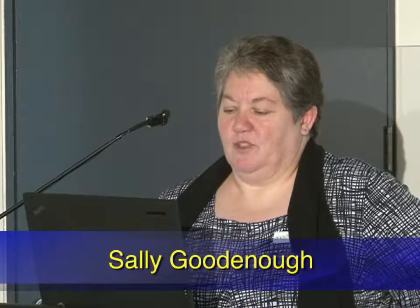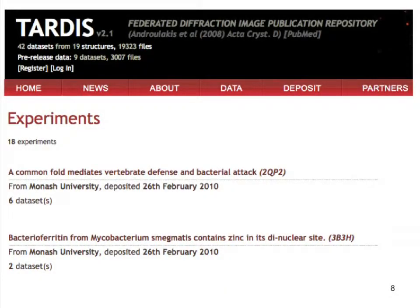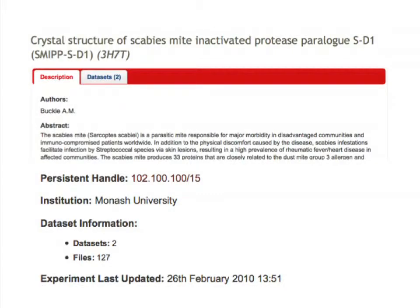I'll talk more about some of these other things this afternoon. I'm going to whip through this - apologies to the TARDIS people who probably didn't know I was going to be demonstrating their stuff. I'm doing this because I wanted to show the different levels of metadata that a collection might have and then show how that's been represented in Research Data Australia. TARDIS, as we've had people talk to us about before, is all about crystallography. Here's the top level of that repository - it's got a couple of experiments there. Experiments is the top category or collection level in this repository.